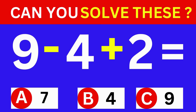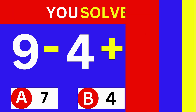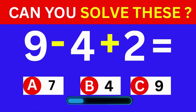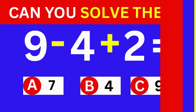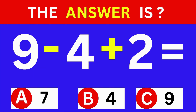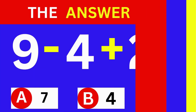9 minus 4 plus 2 equals? A: 7. B: 4. C: 9. The answer is option A, which is 7.